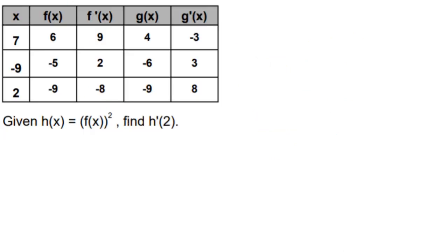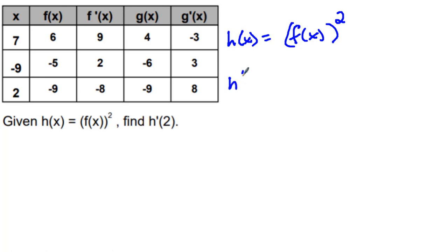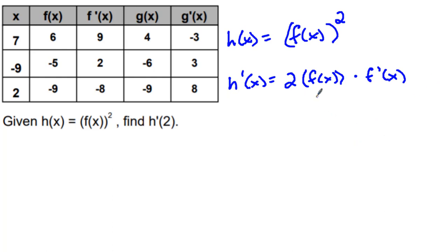I'm going to show you one last example. This example is using f of x squared — so h of x equals f of x, and all of that is being squared. I'm going to find h prime of x using the chain rule. I'm going to take the 2, multiply out: 2 times f of x — this 2 becomes a 1. Then multiply by the derivative of the inside guy. The derivative of f of x is f prime of x. So you can see how I use the power rule on the outside, then multiply by the derivative of f of x, which is f prime of x.